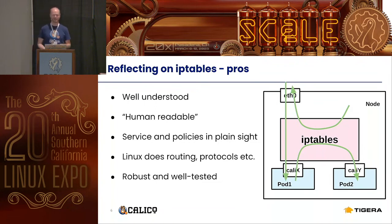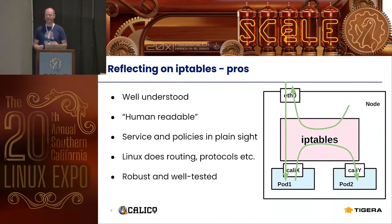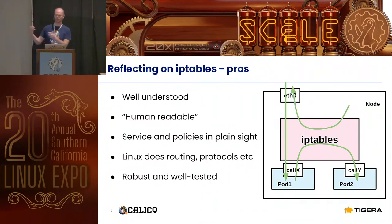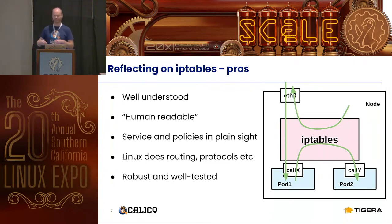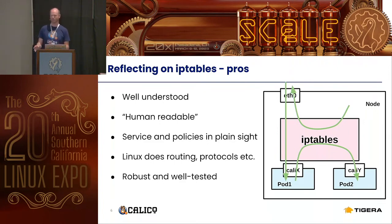The benefits of iptables are well understood. It's been around for 25 years and it is somewhat human readable — you can dump the rules and see what they mean. So when kube-proxy writes rules into iptables, you can debug what kube-proxy meant, and when Calico writes policies you can see how they are executed. Linux handles all the routing, all the protocols, and all the corner cases refined over 20-plus years. So this is very robust and very well tested.